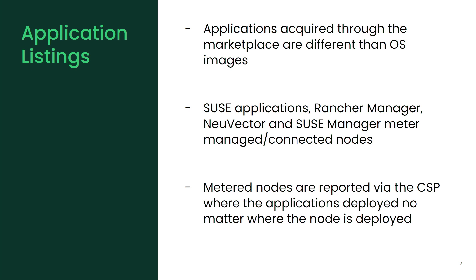You cannot convert a running cluster. If you have a Kubernetes control plane running and you installed Rancher and want to go to the pay-as-you-go model, you cannot convert that running cluster. You have to start from scratch — set up another EKS cluster, go to the marketplace, subscribe to the listing, and use that Helm chart to deploy Rancher into the new cluster. Then you can enroll all the downstream nodes you're managing with Rancher server and shut down the other instance of the control plane. The same is true for NuVector.